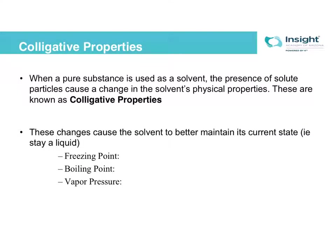So how this ties into colligative properties: when you have a pure substance used as a solvent and it gets combined with a solute, that causes some changes in the solvent's inherent physical properties. These new boiling points and new vapor pressures that occur are called colligative properties, because it's the combination of the solvent and solute that causes slight changes in the solvent's inherent physical properties. If you're dealing with a liquid solvent, it's going to make your solvent more likely to stay a liquid.